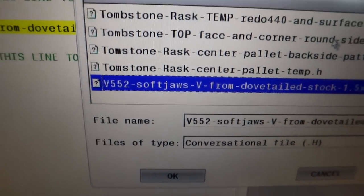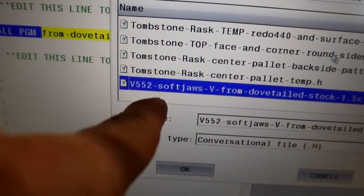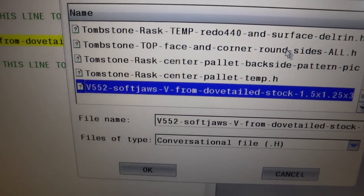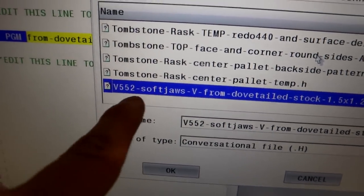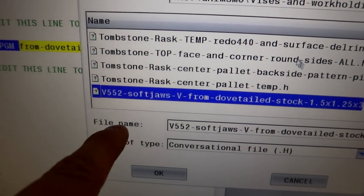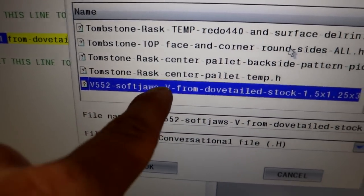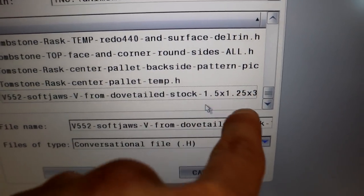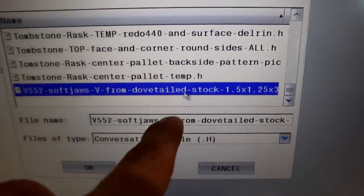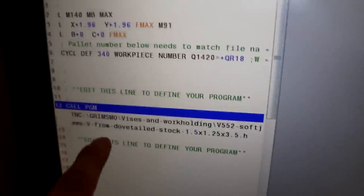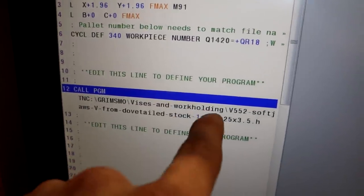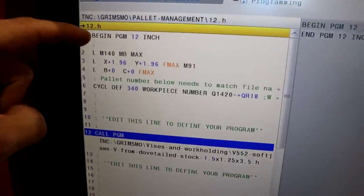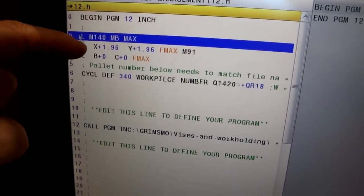And then I'm going to edit. Instead of running the dovetail ops, I'm going to run soft jaws, V from dovetailed stock. So that means it's already been dovetailed. These are the rough dimensions, just so I know if I'm doing the right thing. Push okay. It put it into here. Call program. Direct path to that program. Good to go.